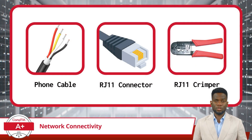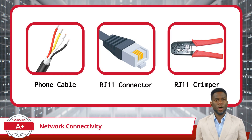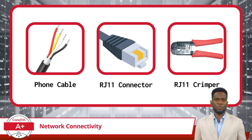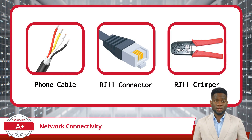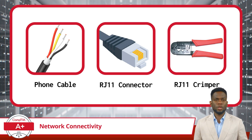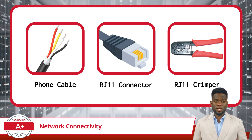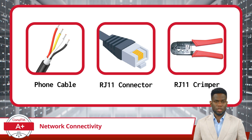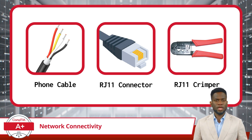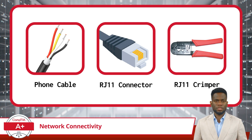Phone cables are constructed with copper wires and are terminated with RJ11 connectors. The RJ11 connector can support up to six pins or positions into which wires can be inserted, but most use cases for the RJ11 connector only utilize two or four of those pins. To complete the connection, a crimper designed for RJ11 connectors is used to attach the cable securely, ensuring proper functionality within telephone systems.